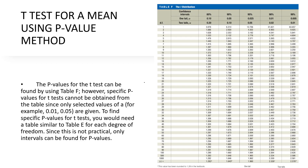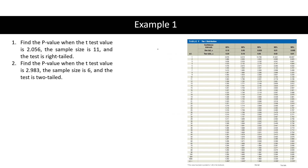The p-value for a t-test can be found by using Table F. However, specific values for a t-test cannot be obtained from the table since only selected values of alpha such as 0.01 and 0.05 are given. To find specific values you would need a table similar to Table E for each degree of freedom. Since this is not practical, only the intervals can be found for the p-value — so it's an interval only.